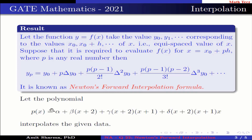Let the polynomial P(x) = α + β(x+2) + γ(x+2)(x+1) + δ(x+2)(x+1)(x) interpolate the given data.